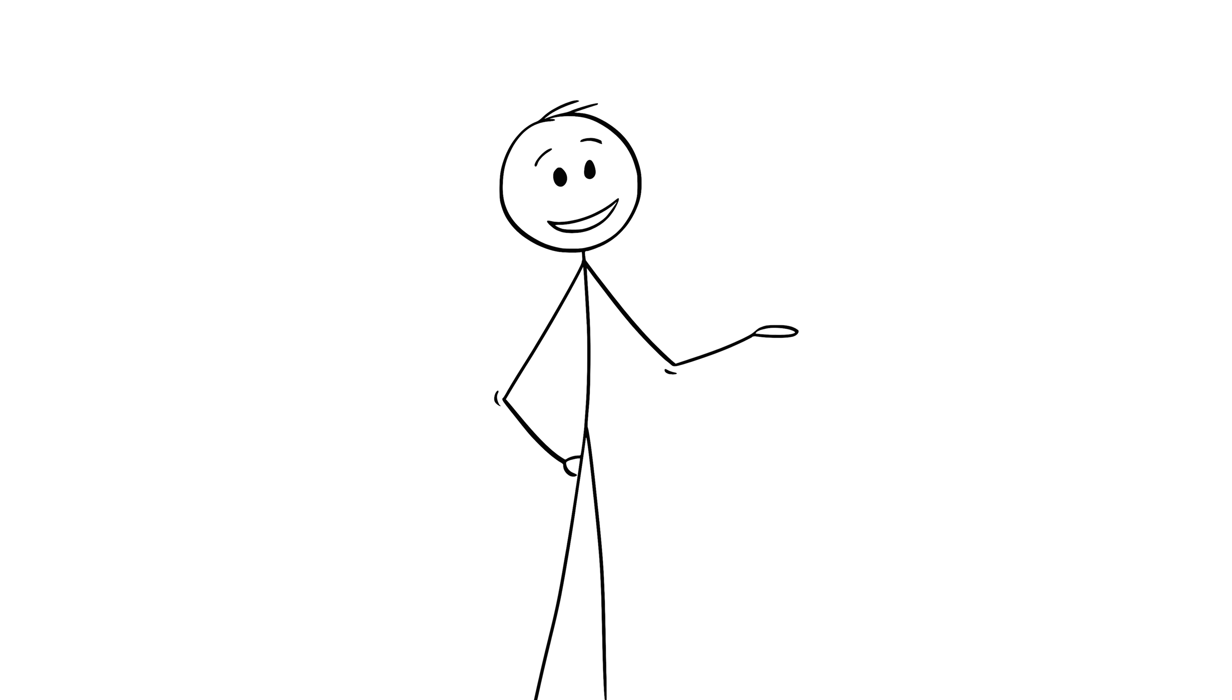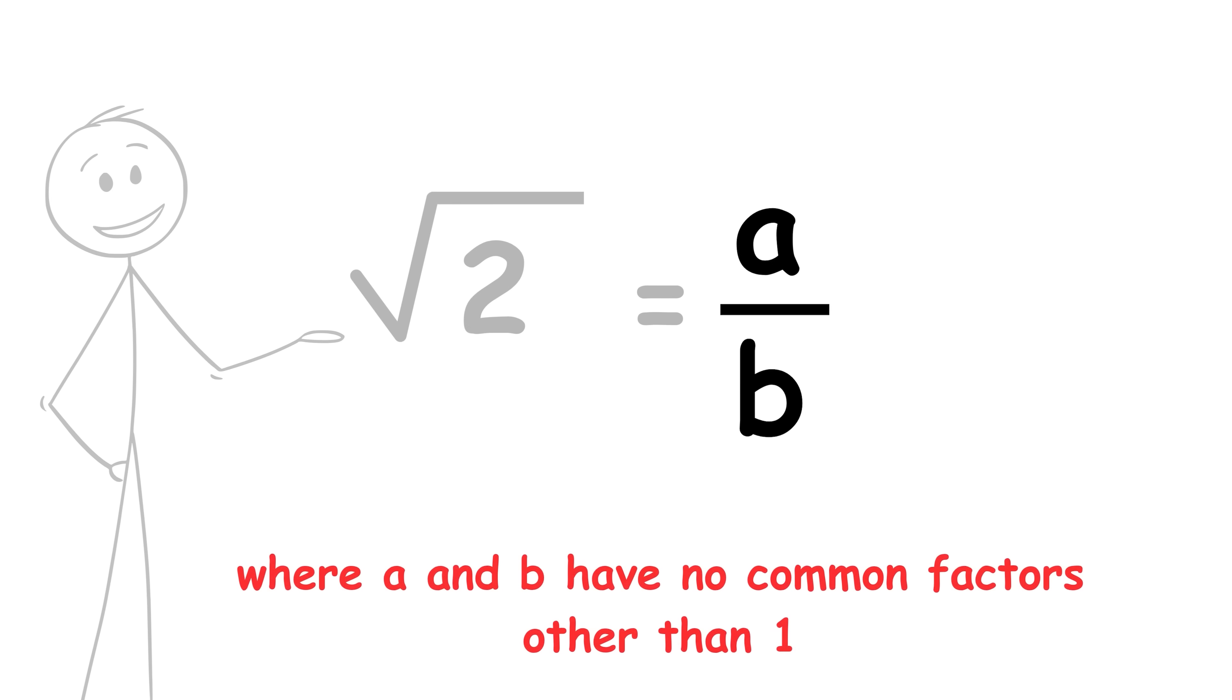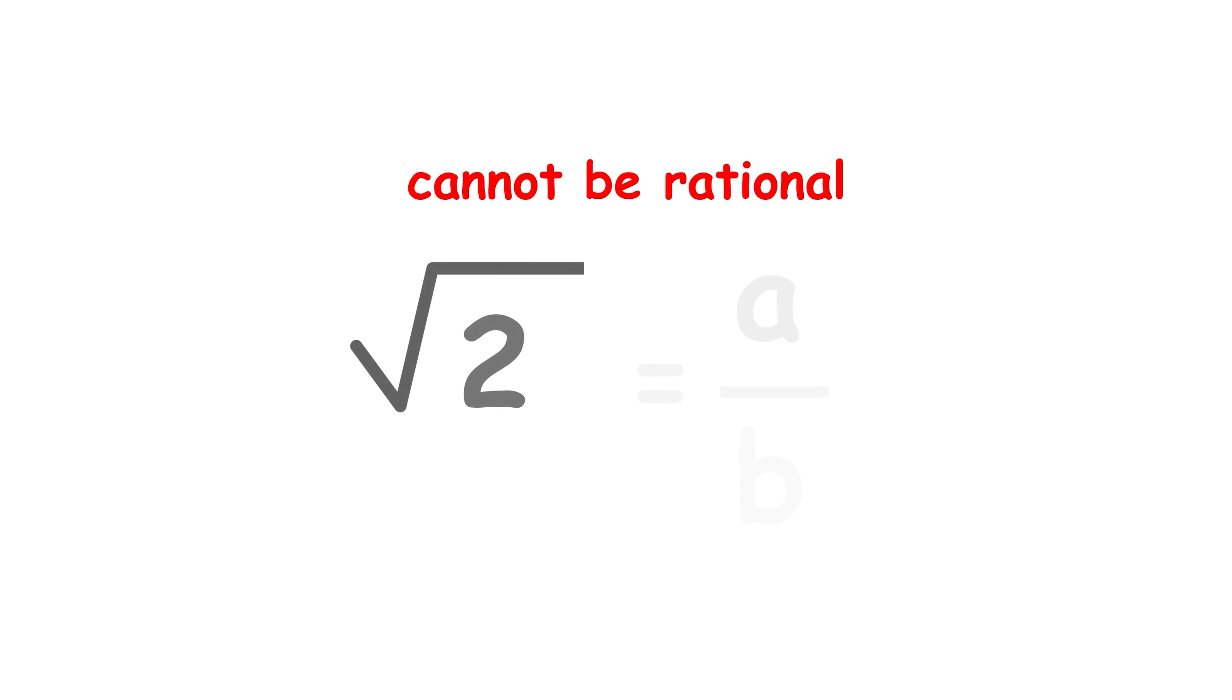Similarly to before, k squared is a whole number, so 2k squared is even, and the equal value b squared must be even as well. Since b squared is even, b must also be even. If both a and b are even, they share a common factor of 2, contradicting our initial assumption that a and b share no common factors except 1. Hence, square root 2 cannot be rational.